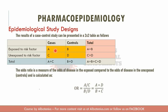The ratio of a to c is the odds of exposure in the cases, whereas the ratio of b to d is the odds of exposure in the controls. The odds ratio (OR) is the ratio of these two odds — that is, the odds of exposure in cases divided by the odds of exposure in controls. The formula is: OR = (a/c) ÷ (b/d).